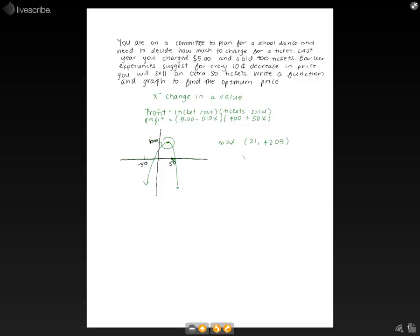So this means that x equals 21. So our change in our values is going to be 21. So if we're looking at ticket cost,